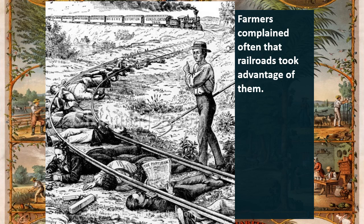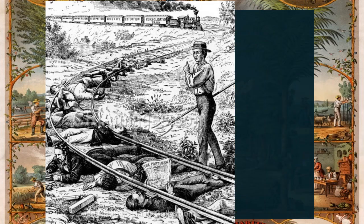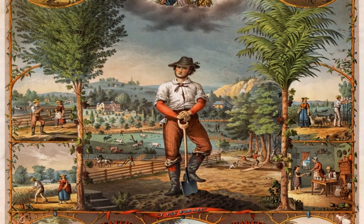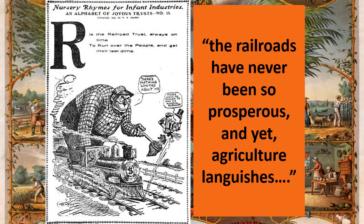We need to tackle the money issue, tackle the railroad issue and stop letting the railroads drive all over us, and tackle the banking issue. We need to figure out how we can organize farmers to deal with the problems they're facing — where railroads and industries are making money but farmers are not. And if money is the core problem, how are they going to solve it? That answer we'll look at in another lecture.